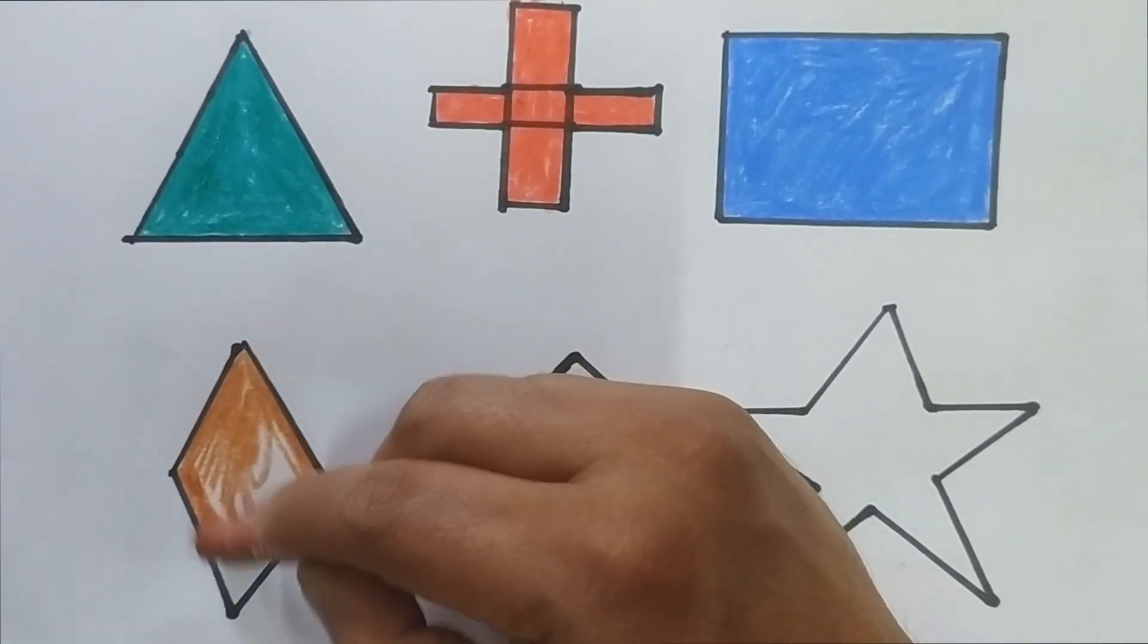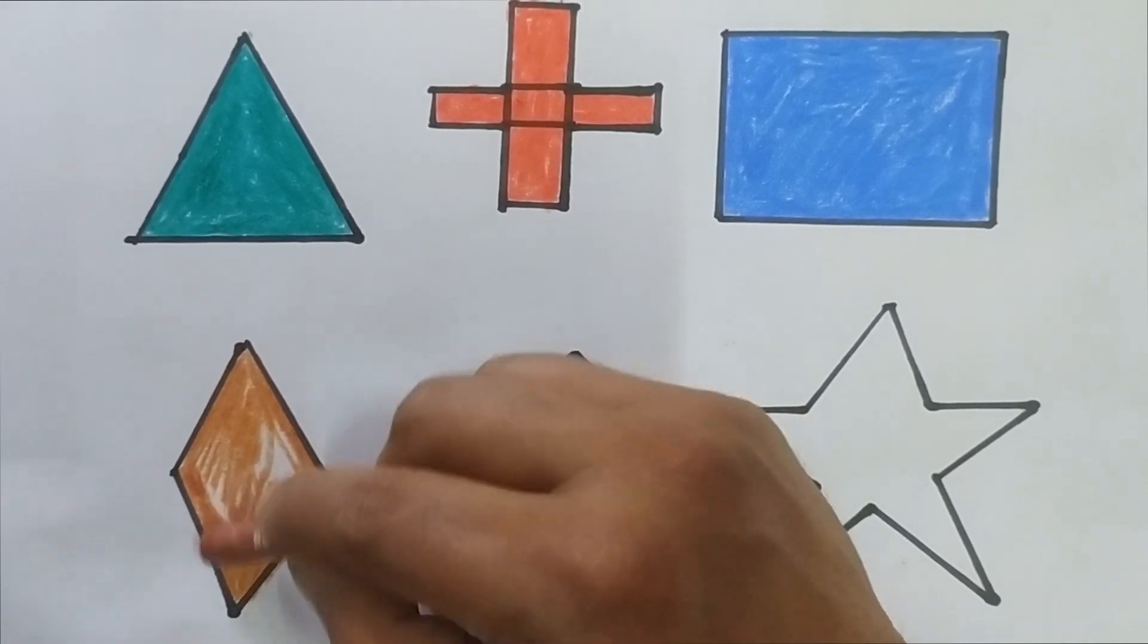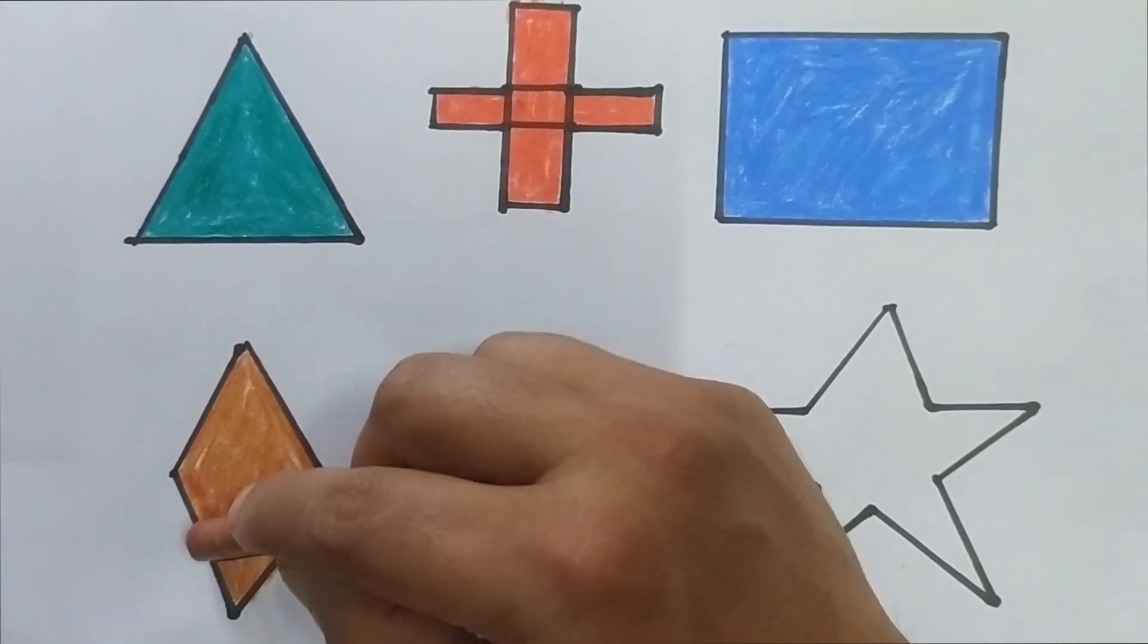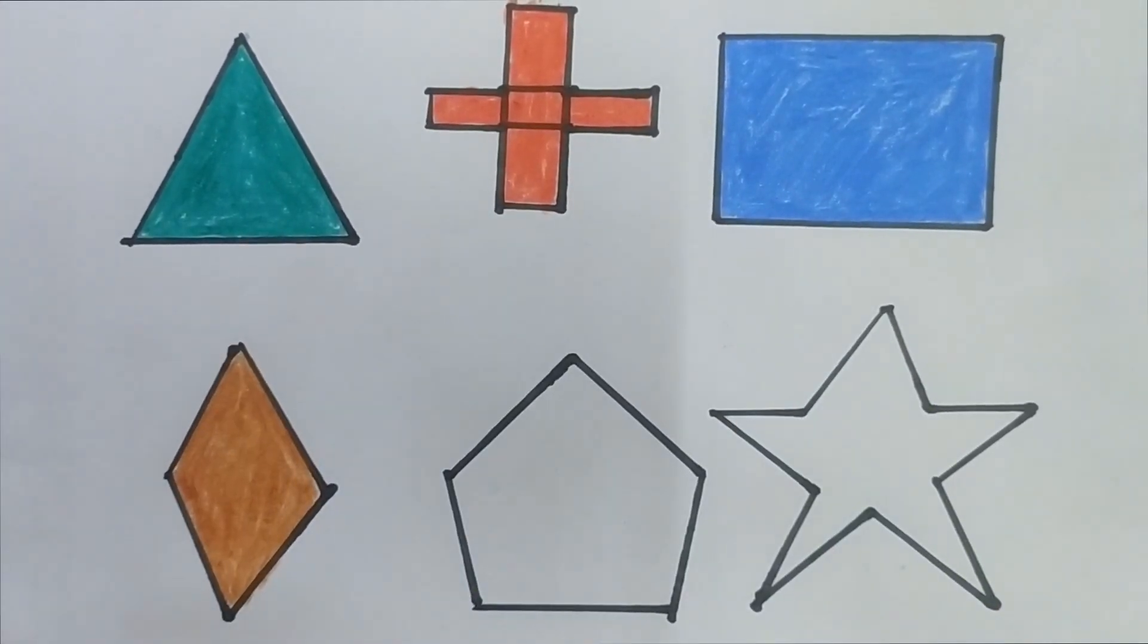Now we are coloring rhombus and this is brown color.